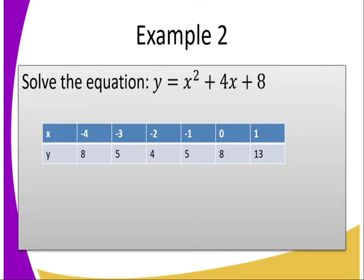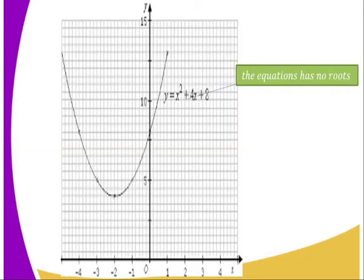We get to another example. We are given the equation y equals x squared plus 4x plus 8. You need to get the table and set the limits. The limits are negative 4 to 1. Use the calculator, press the values of x, and it will give you the values of y. After getting those values, we plot the points — this is the kind of graph you are going to get.